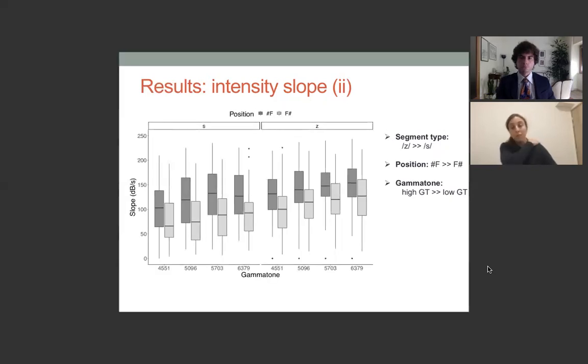Here we see the results of the intensity slope models when restricting to the four gammatones. We found an effect of segment type, Z's having steeper slopes than S's, and an effect of position with steeper slope in initial position than in final position, and an effect of gammatones with steeper slope in higher gammatones than lower gammatones. And crucially, the interaction that we found for the slopes over the entire spectrum goes away when we restrict our analysis to the high frequency region because the devoicing doesn't affect this part of the spectrum.